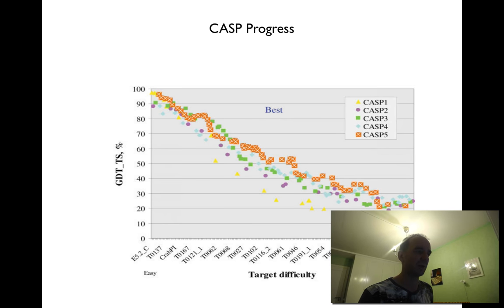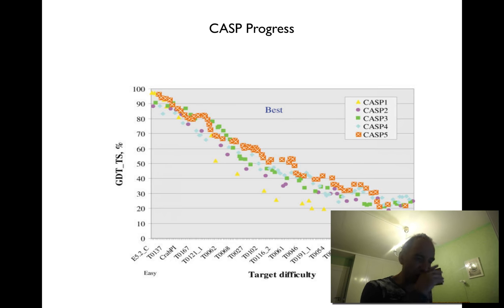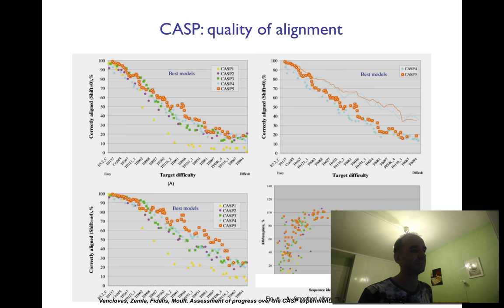Here you can see there was a big jump in progress — this axis shows some measure of quality and difficulty. You can see the yellow one in CASP 1, then a big jump for CASP 2 to the pink, and then continuing into CASP 3 and 4. There was even a big jump for CASP 5, and then it continued to improve slightly, though less and less each year. But overall, progress has been steady and you can study the advancement of the field through these results.